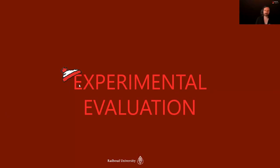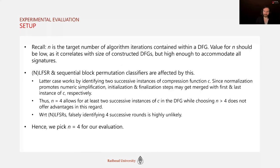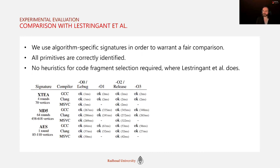We evaluated our solution for accuracy and running time on a mid-range Ryzen 3600 machine with 16 GB of RAM against several test sets, including the one used in prior work by Lestrignan et al., OpenWRT shared libraries and executables, various public proprietary cipher implementations, and a collection of real-world embedded firmwares from PLCs and ECUs. We picked N=4 iterations within a DFG, which turned out to be very sufficient.